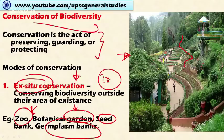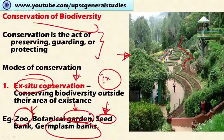In a seed bank, seeds of various plant species are collected and stored safely in a repository for future use, either for breeding programs, reproduction, or multiplication of those plant species.